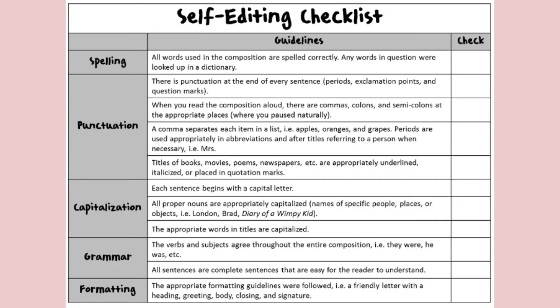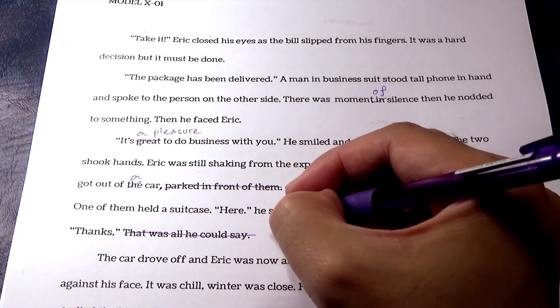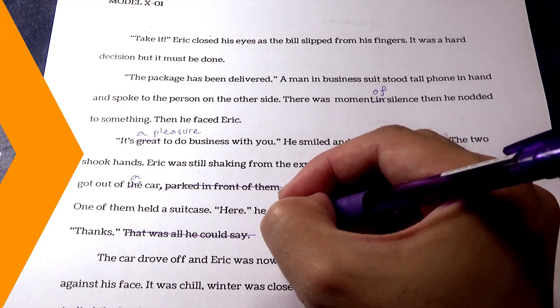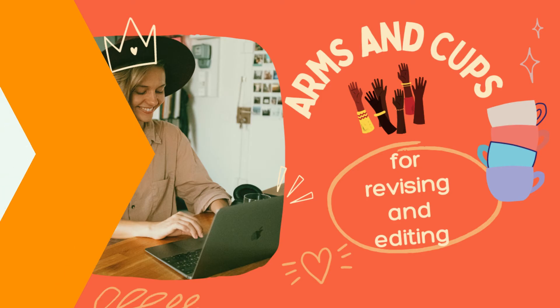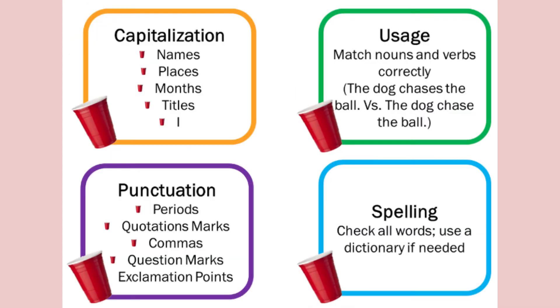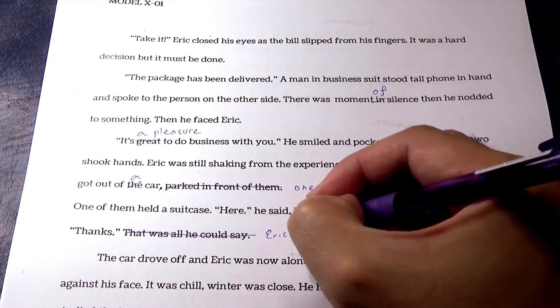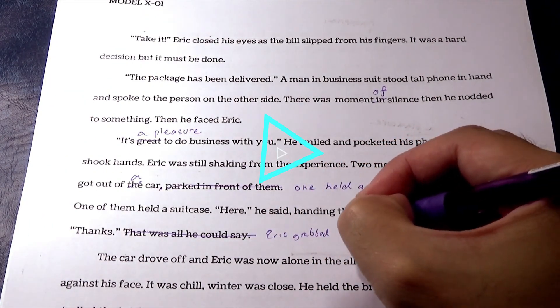In fact, these are the words that stand for CUPS. Using the CUPS strategy and the editing checklist can help you edit your writing in a more professional way. So remember: ARMS and CUPS for revising and editing. The graphics and mnemonics provided in this video will help you remember all the important steps to revise and edit.